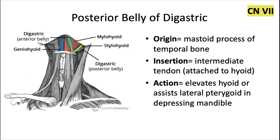The posterior belly of the digastric is innervated by cranial nerve 7, and it originates from the mastoid process of the temporal bone. It also inserts into that intermediate tendon that's connecting the two bellies. That tendon is attached to the hyoid bone.